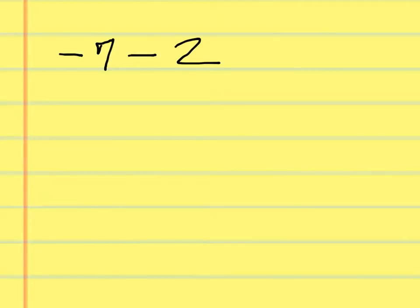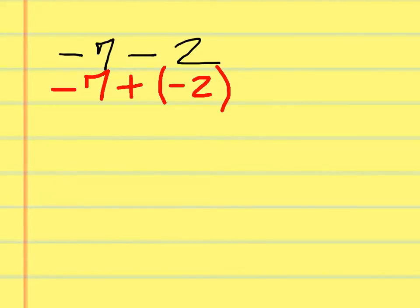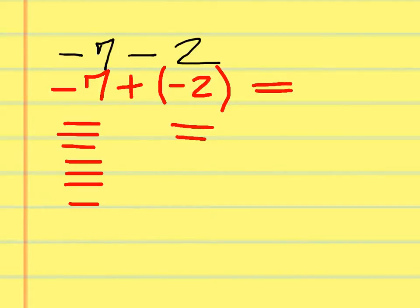Negative 7 minus 2. What can I trade out a minus sign for? Plus a negative. So we can do negative 7 plus a negative 2. I have 7 negative signs and 2 negative signs. How many negative signs altogether? 9. So it's negative 9.